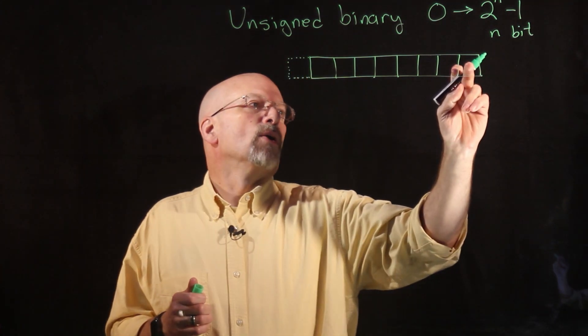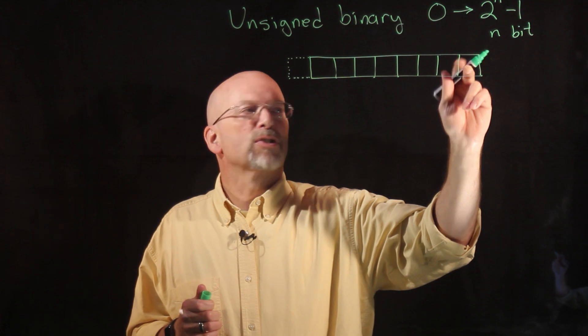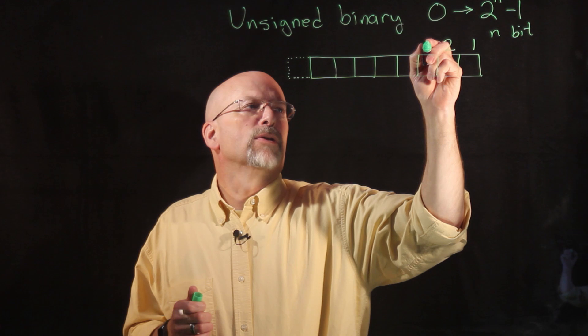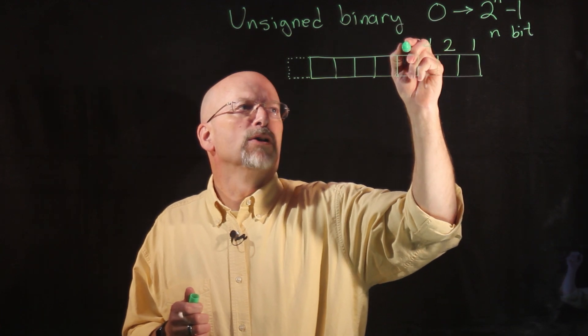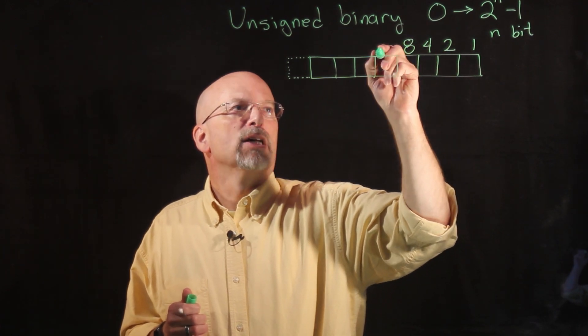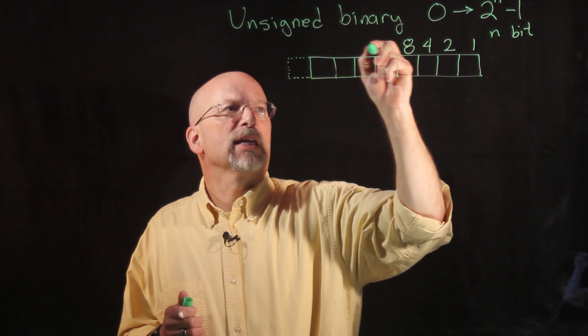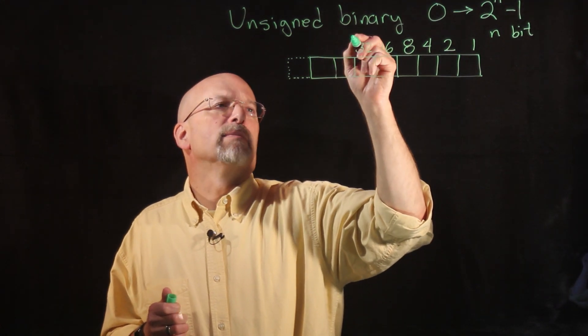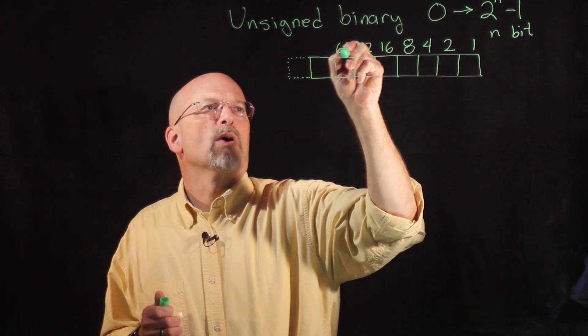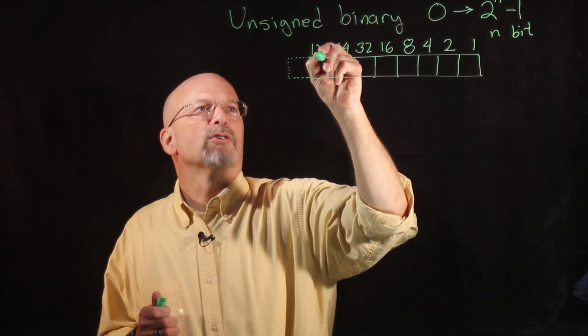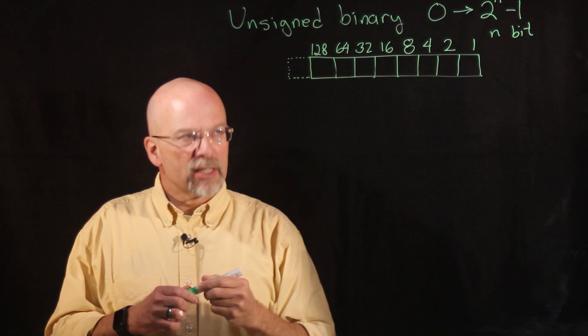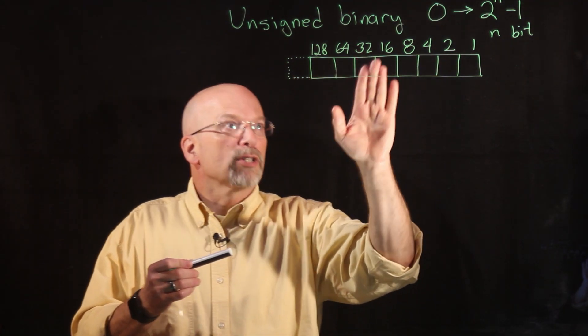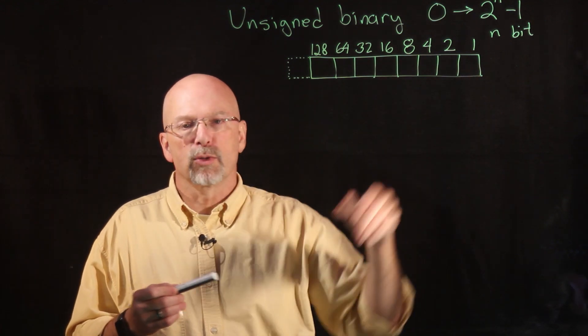So this position right here is the two to the zero or one, and we have two to the one, two, two to the two, four, two to the three, eight, two to the four, 16, two to the five, 32, two to the sixth which is 64, and two to the seventh which is 128. So we can represent values up to 128 plus 64 plus 32 plus 16 plus 8 plus 4 plus 2 plus 1, or 255.